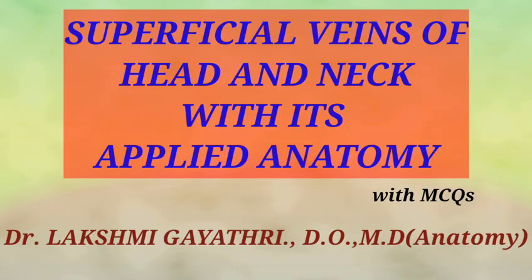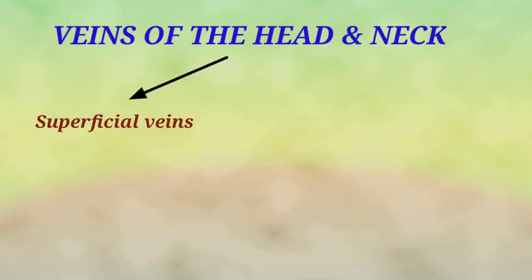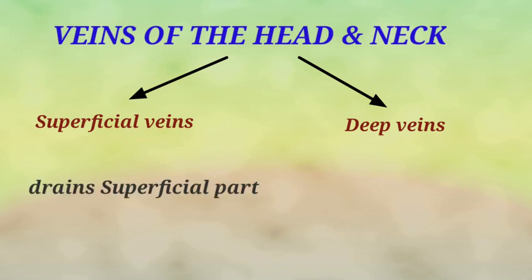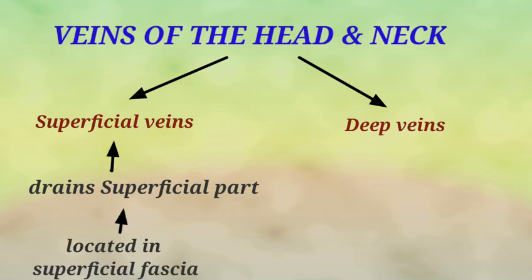Hello everyone, this video is about the superficial veins of the head and neck with its applied anatomy. I'm Dr. Laxmi Gayatri presenting this video. As in all other regions, the veins of the head and neck are divided into superficial veins and deep veins. The superficial veins drain the venous blood from the superficial part of the head and neck and are present beneath the skin and in the superficial fascia. They drain the blood into the deep veins which are present beneath the muscles.